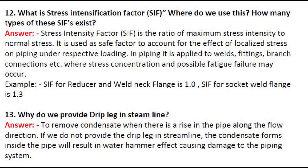Question 13: Why do we provide a drip leg in a steam line? Answer: To remove condensate when there is a rise in the pipe along the flow direction. If we do not provide the drip leg in the steam line, the condensate that forms inside the pipe will result in a water hammer effect, causing damage to the piping system.